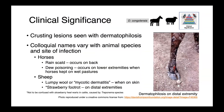In Dermatophilus, we see crusting lesions of the cutaneous tissues, and colloquial names vary with the animal species and also the site of infection. In horses, rain scald is what we call infections which occur on the back, whereas dew poisoning refers to those infections on the lower extremities, in horses kept in wet pastures.